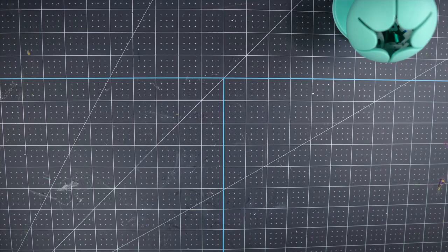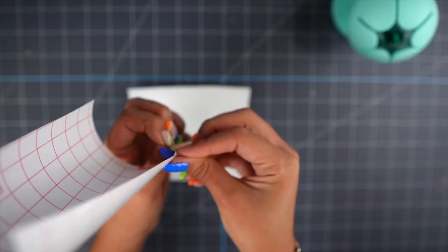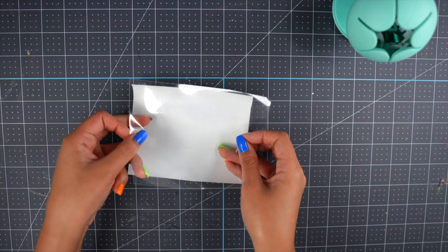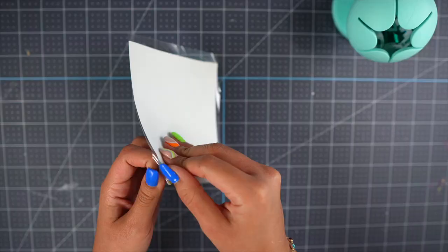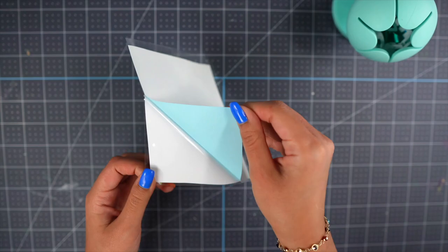I'm going to go ahead and weed the other one. And whenever you cut these out make sure you leave some space around the entire design. That way whenever you transfer it onto your tumbler it will have a good grip. Again I'm just weeding the elements of the design.